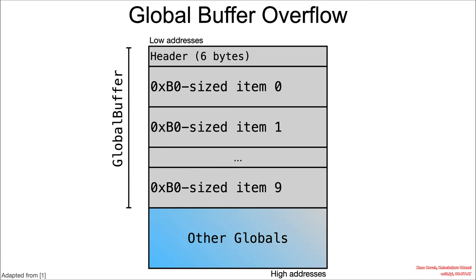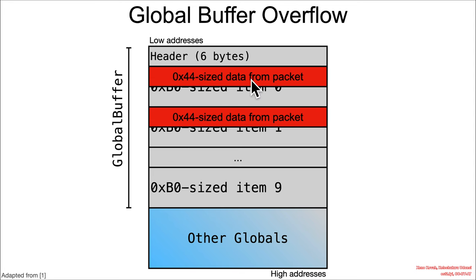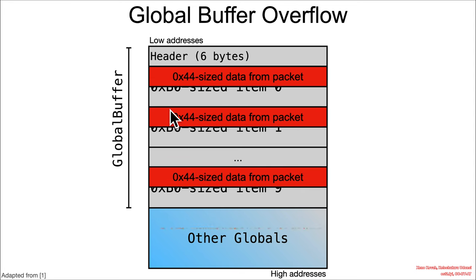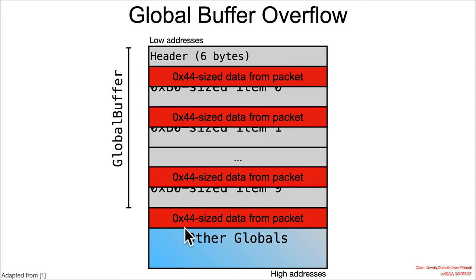That would look something like this: if this is the global buffer of a header and then 10 B0-sized entries, ultimately it's copying 44 bytes, skipping B0 forward, copying 44, skipping B0 forward. And ultimately, once the item count gets greater than or equal to 10, it's going to be copying past the bounds of the global buffer into other globals that happen to be adjacent.